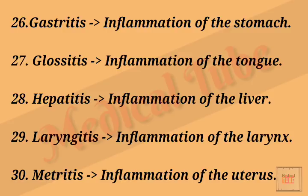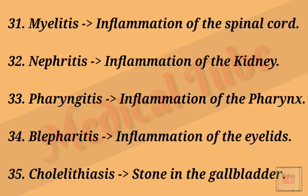Number thirty: metritis means inflammation of the uterus. Number thirty-one: myelitis means inflammation of the spinal cord. Number thirty-two: nephritis means inflammation of the kidney. Number thirty-three: pharyngitis means inflammation of the pharynx.